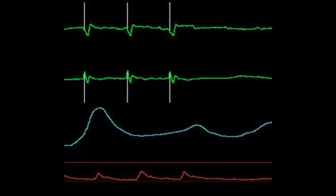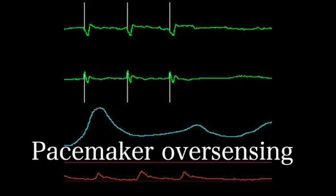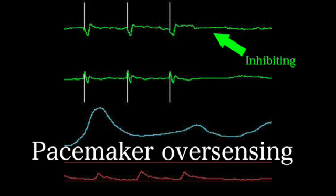If the pacemaker is too sensitive, seeing too much, it may see signals that are not the heart, such as the diaphragm, and inhibit itself inappropriately and not pace when it should. This is called over-sensing.